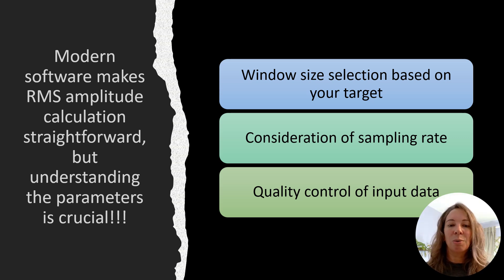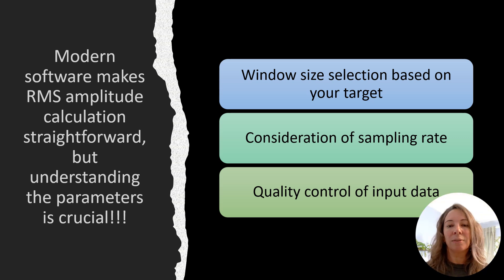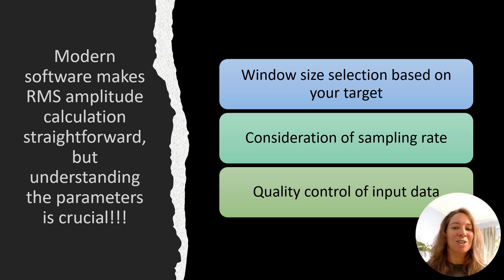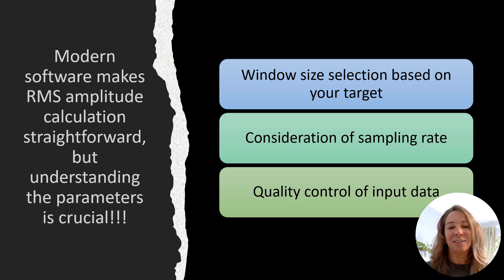Second, always keep your seismic data's sampling rate in mind, because that directly affects your temporal resolution. And finally, and this is really crucial, always pay attention to your input data quality. Remember, even the most sophisticated RMS calculation or any seismic attribute cannot overcome poor quality input data.